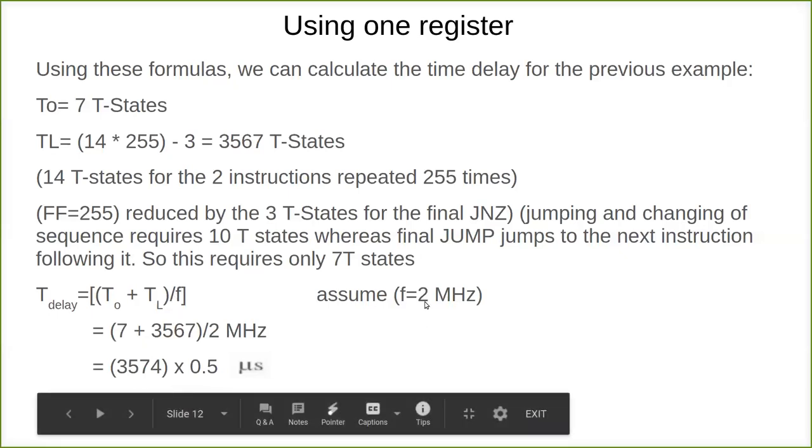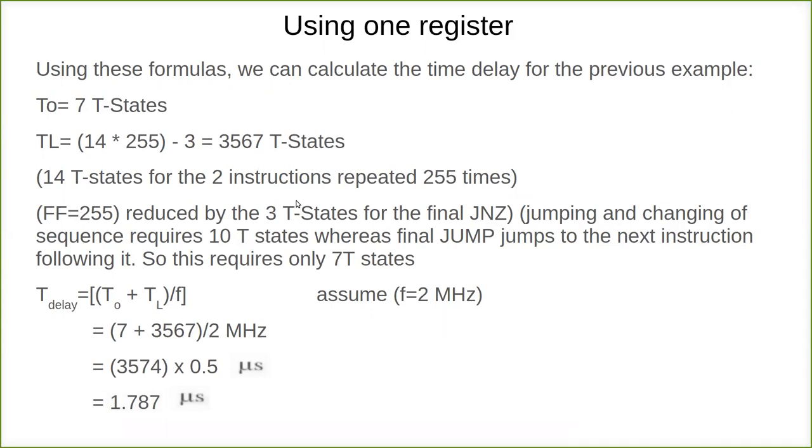T0 plus TL divided by frequency. Assume F equals 2 MHz, so 1 by F is 0.5. So 7 plus 3567, which is outside and inside loop, multiplied by 0.5 microseconds gives the total time delay, which is 1.787 microseconds.